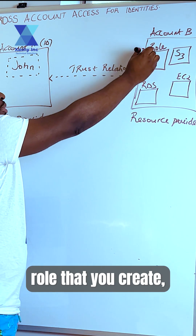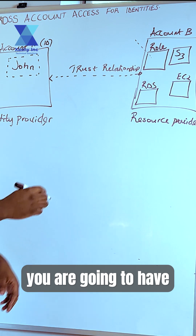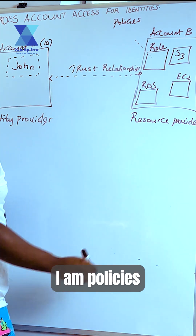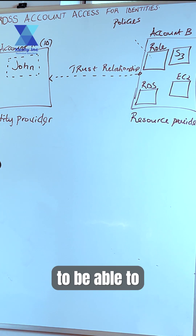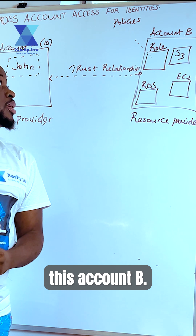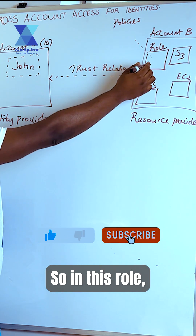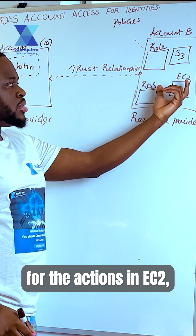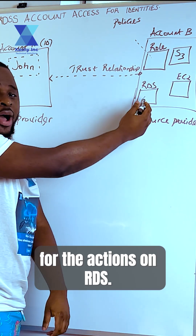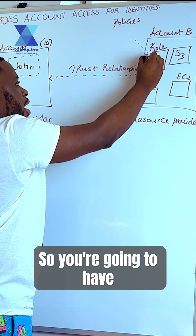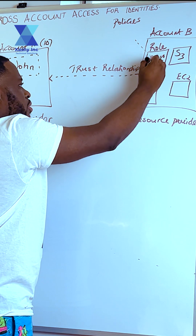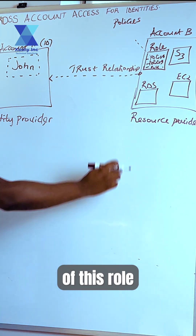Inside of the role that you create, you are going to have the IAM policies — the permissions you want the user John to have when he accesses account B. In that role, you are going to have permissions for actions on EC2, permissions for actions on S3, and permissions for actions on RDS. Those policies will be included as part of this role.